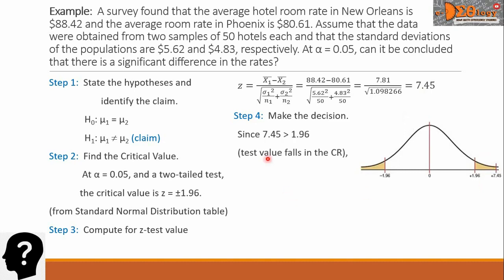So we say that, since 7.45 is greater than 1.96, and this test value falls in the critical region, we reject the null hypothesis.